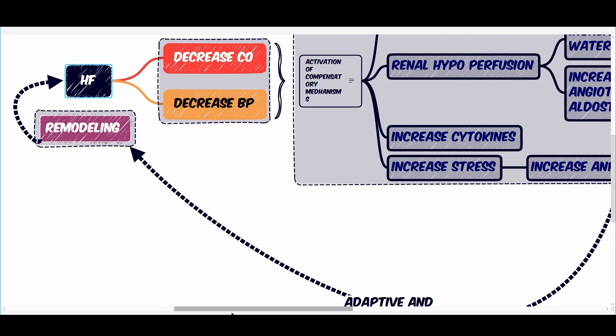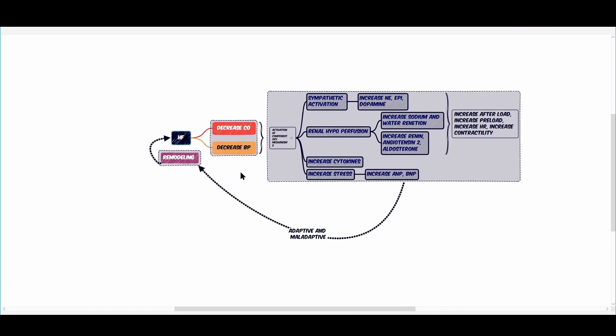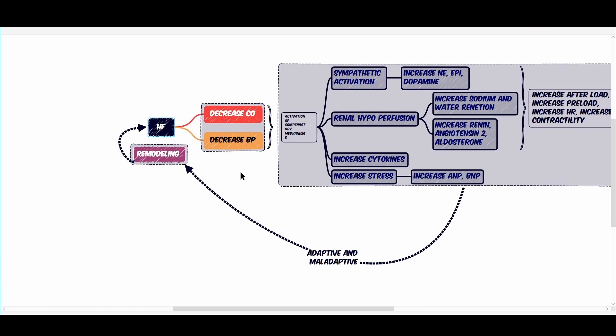Temporarily, these compensatory mechanisms try to reverse the decreased cardiac output and blood pressure. But with long-term activation, there will be remodeling which includes hypertrophy of the myocardium and asynchronous contraction.